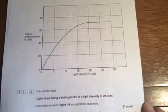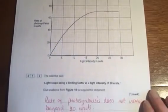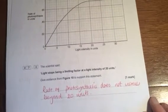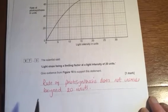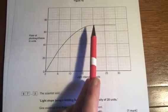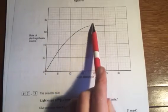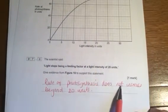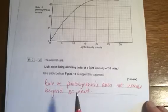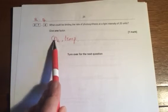A student carried out a similar investigation himself. The scientist said light stops being a limiting factor at a light intensity of 20 units. Give the evidence. So if we go up to 20 arbitrary units here, the evidence is that the line does not continue going straight up. So the rate of photosynthesis does not increase beyond 20 units. That's our evidence. What could be limiting the rate of photosynthesis as the light intensity increases after this point? It's not going to be light so it could be CO2 one mark or it could be temperature one mark. So just pick one.